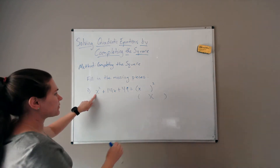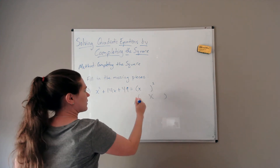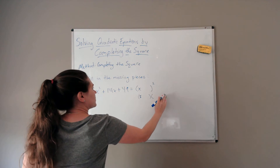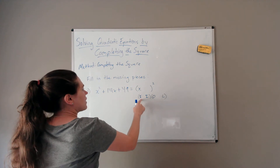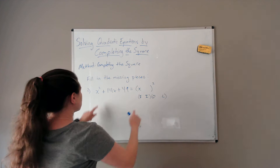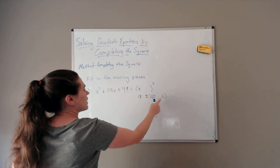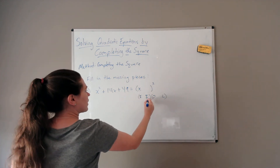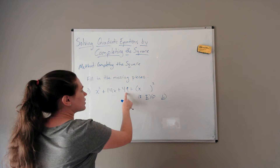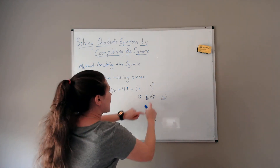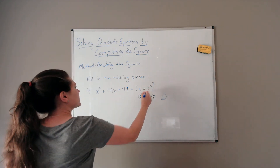As long as a is 1, using FOIL: this constant times itself gives you the last term, and this constant doubled gives you the middle coefficient. So the constant we put here must multiply together to give 49 and double to give 14. That number is positive 7. For number 2, x squared blank plus 9 equals x minus 3 squared — the linear term is missing. Since negative 3 times negative 3 gives 9, doubling negative 3 gives negative 6x.